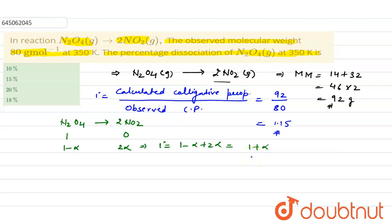So from here we can calculate alpha. Alpha would be i is 1.15, we have calculated here this value, minus 1, it will be 0.15. Percentage dissociation would be 0.15 multiply by 100, it will be equal to 15 percent. This is the dissociation of N₂O₄, so our answer is second option. This is our correct answer.